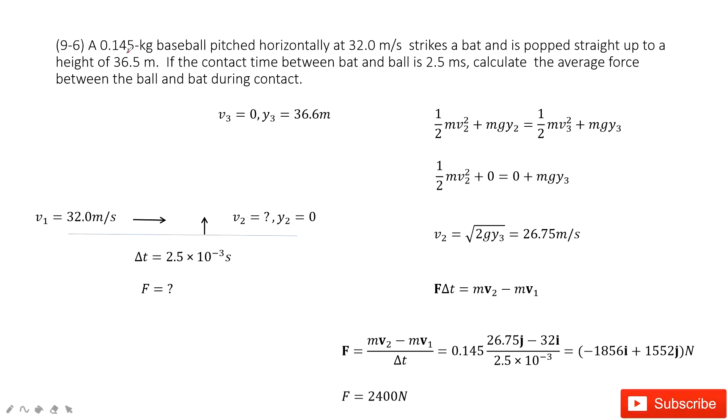First thing, the mass of this baseball is given. At initial, it moves horizontally at 32 meters per second. That means initial velocity is 32 meters per second horizontally.